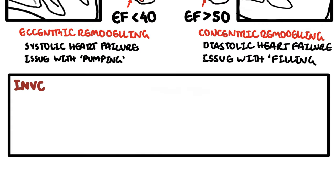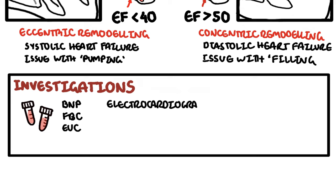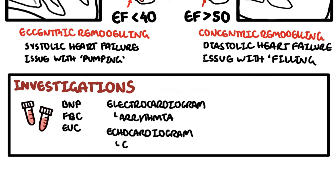Investigations to order in patients with heart failure typically include brain natriuretic peptide (BNP), which is a substance released by the ventricular myocytes in response to ventricular distension. It is important to check a full blood count and electrolytes, urea, and creatinine. An ECG should be performed to look for an underlying arrhythmia or a recent ischemic event. Imaging studies include an echocardiogram, specifically looking at the ejection fraction, left ventricular size, as well as valvular pathology.